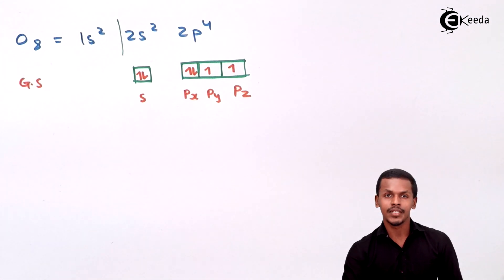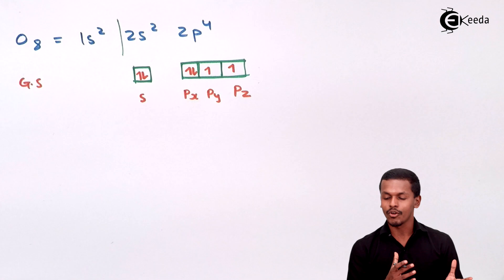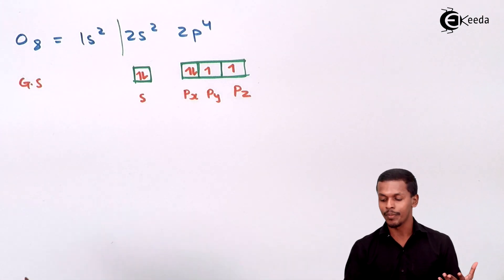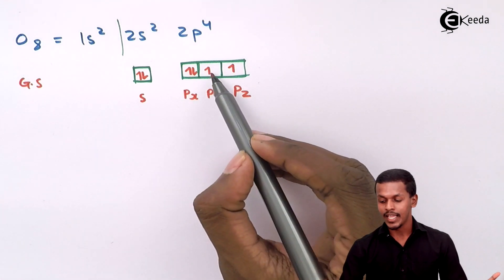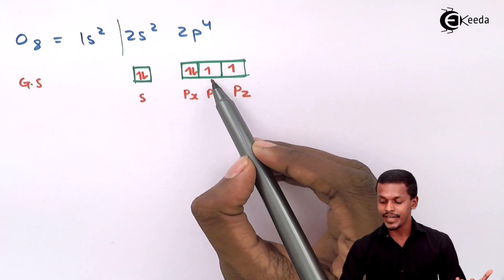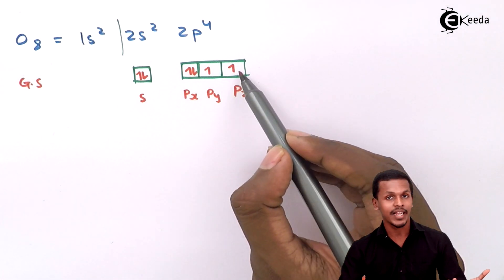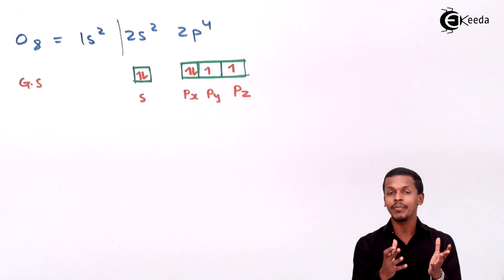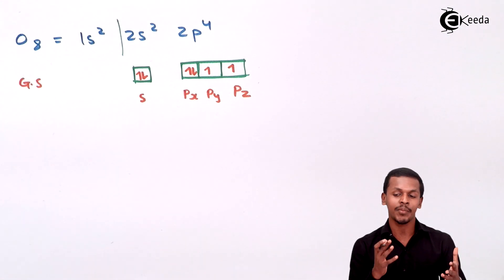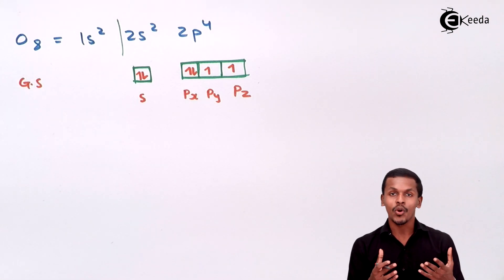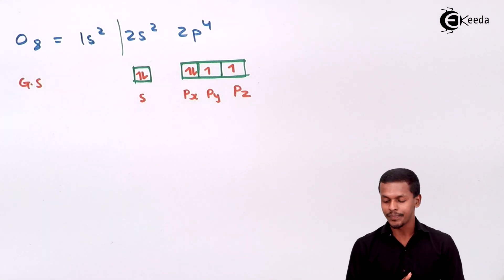During the formation of the bond between oxygen and hydrogen, the hydrogen atom forms a bond with an unpaired electron of oxygen. Since oxygen has two unpaired electrons, two hydrogen atoms are involved to form bonds with the oxygen.